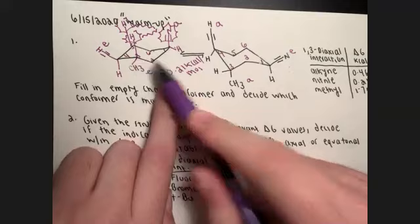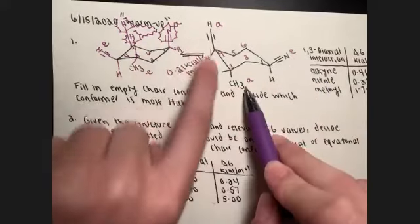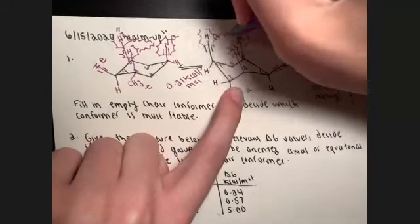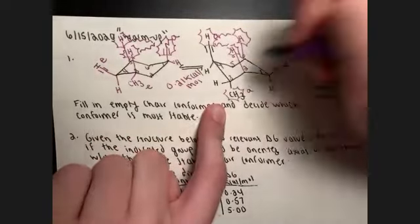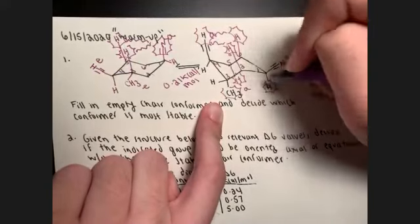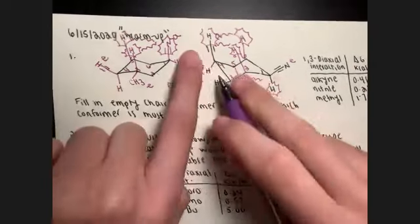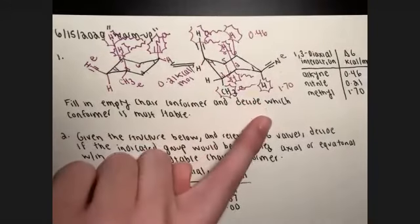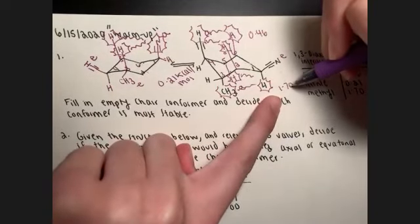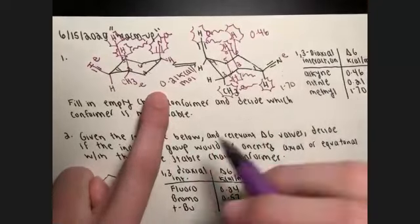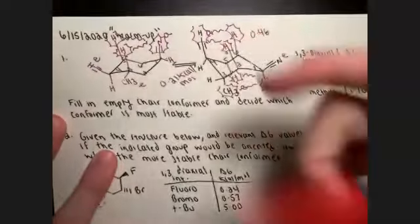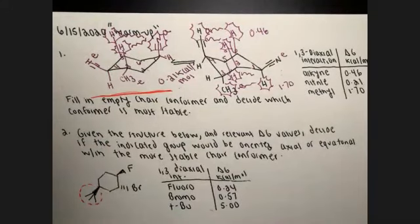In the second chair conformer, the nitrile is equatorial, but we have two axial substituents. The alkyne costs 0.46 kcal/mol and the methyl group costs 1.70 kcal/mol. That total is clearly much higher than 0.21, so the left chair conformer is the most stable. Any questions?